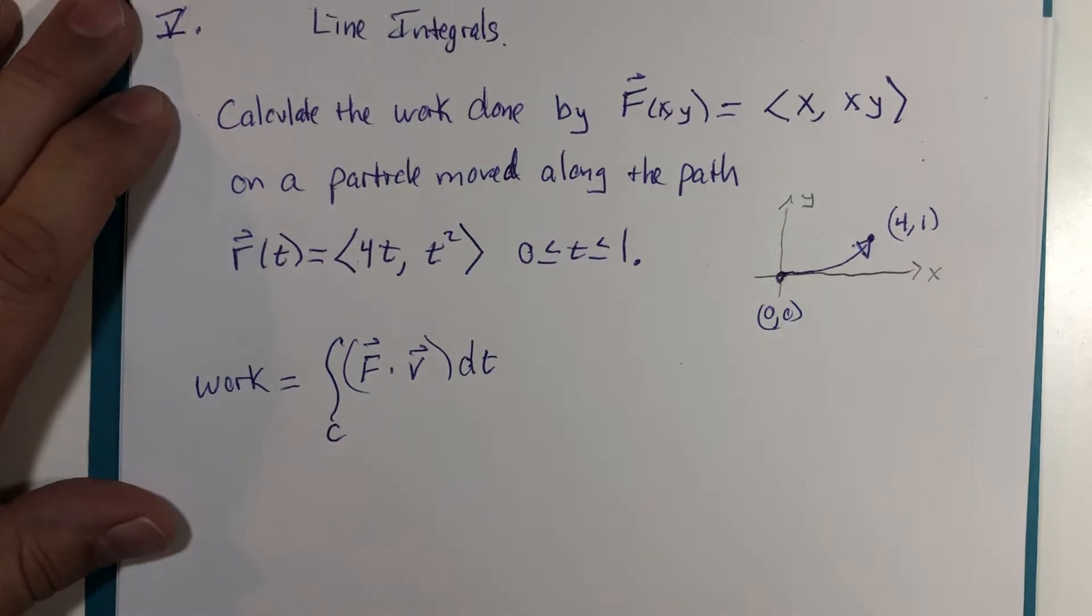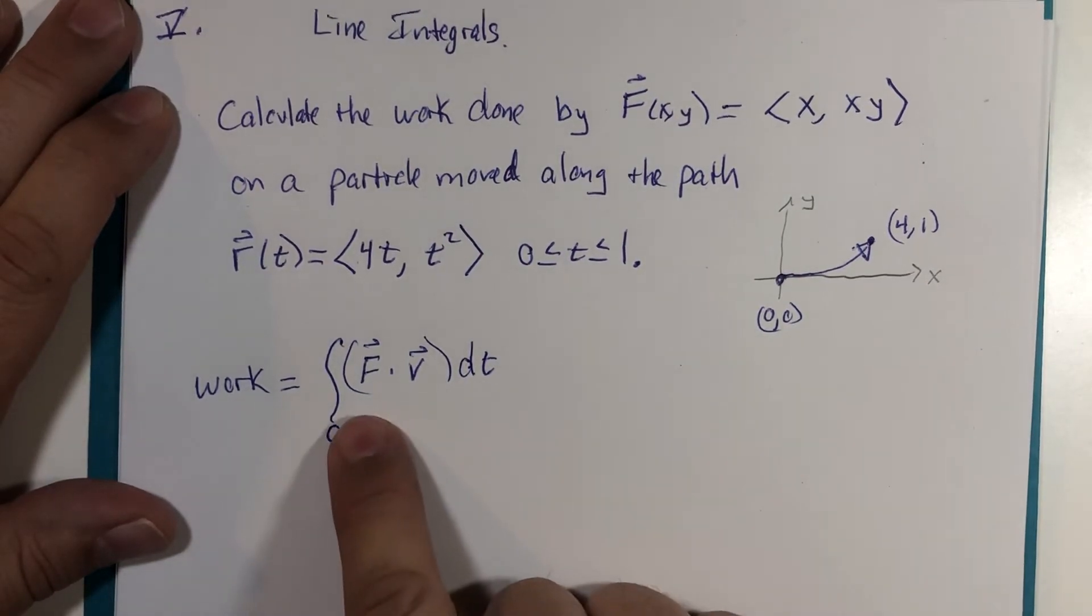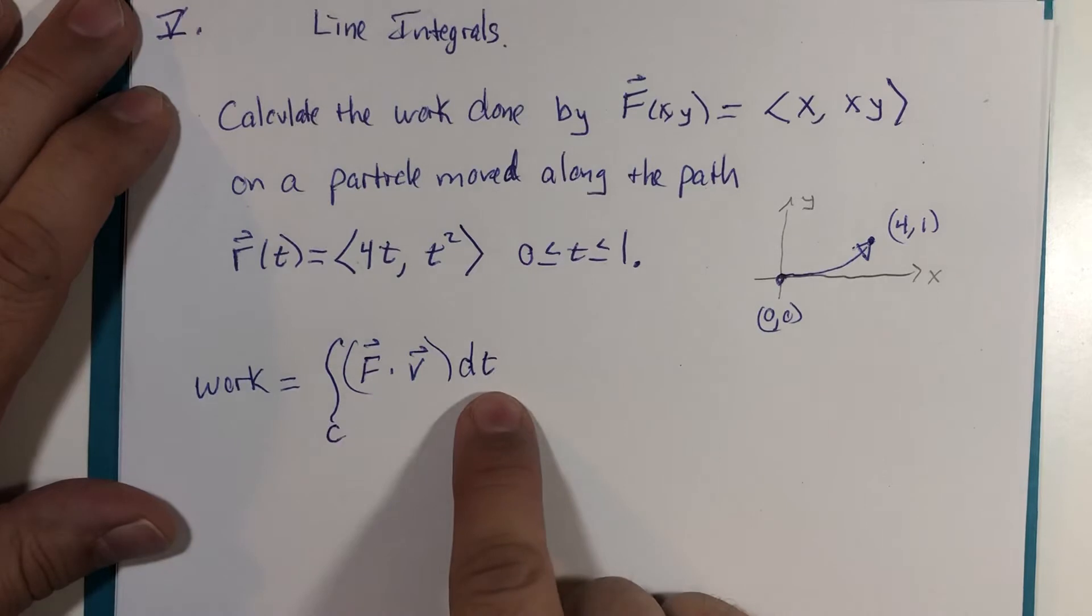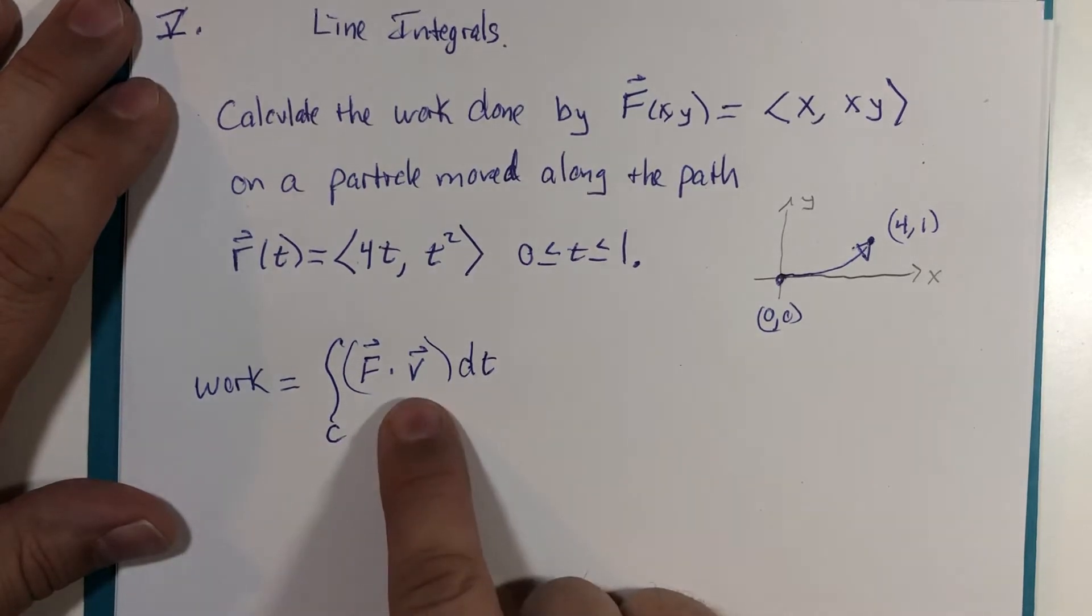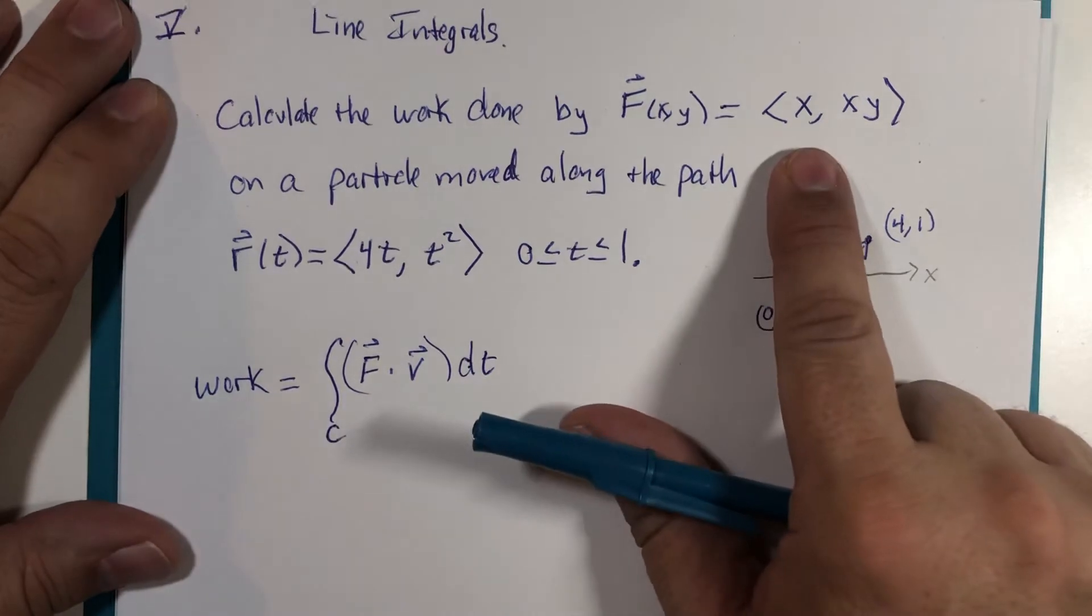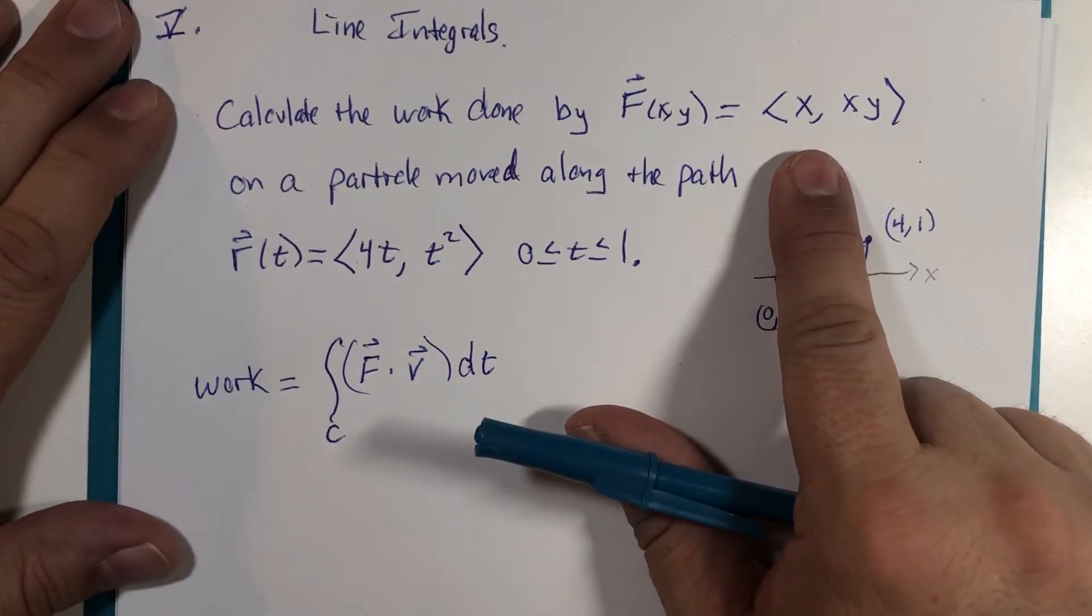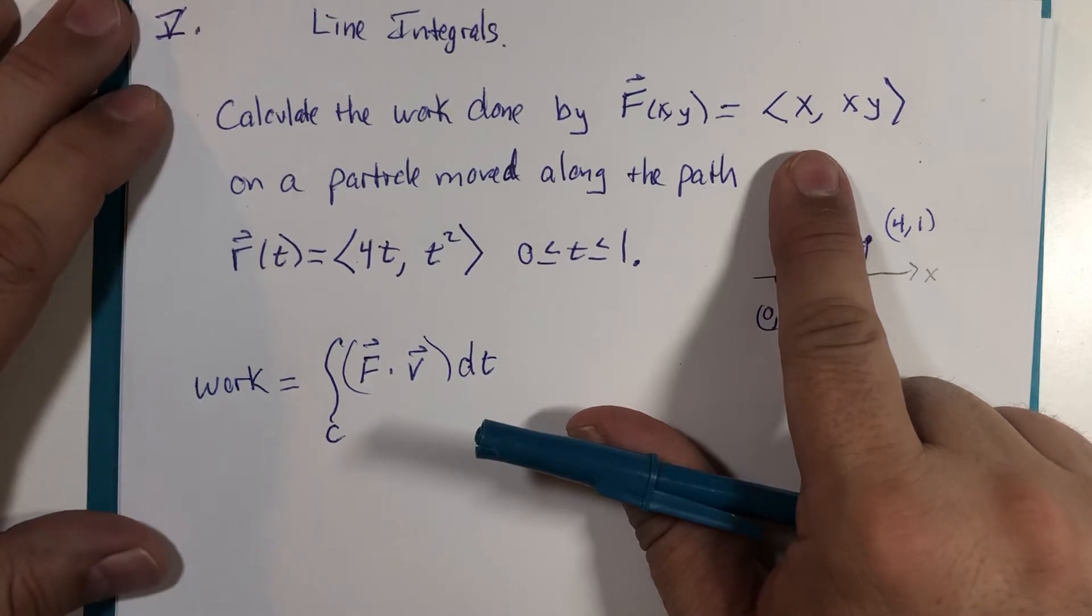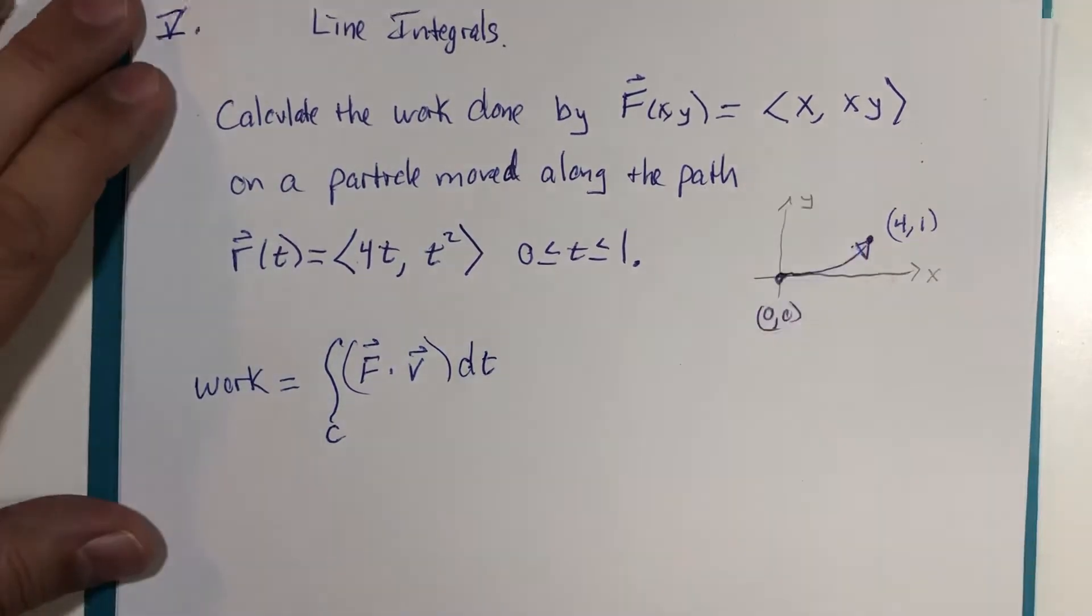Now, one reason the textbooks will frequently not leave something like this as a formula is velocity may be in terms of t, but the vector field is not in terms of t, and so it could be considered just notationally not very strong.